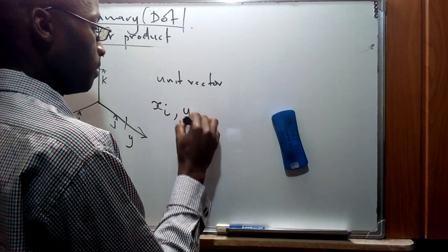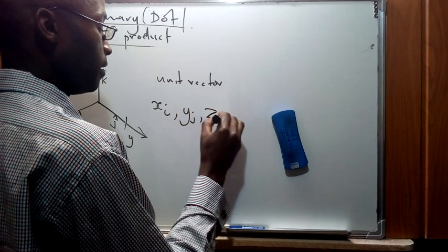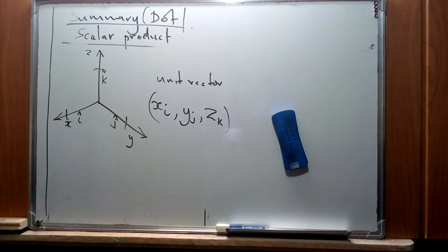...the y component which is represented by j, the z component is represented by k. So therefore, that's a three-dimensional representation of that specific vector.